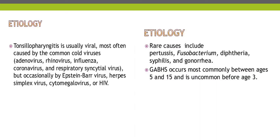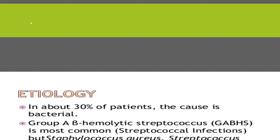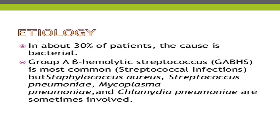Rarely, bacterial causes such as pertussis, fusobacterium, diphtheria, syphilis, and gonorrhea can occur. Group A beta-hemolytic streptococcus occurs most commonly between ages 5 to 15 and is uncommon before age three. In about 30 percent of patients the cause is bacterial, while the rest is viral. Staphylococcus aureus, Streptococcus pneumoniae, Mycoplasma pneumoniae, and Chlamydia pneumoniae are sometimes involved, but overall the most common bacterial etiology is Group A beta-hemolytic streptococcus.